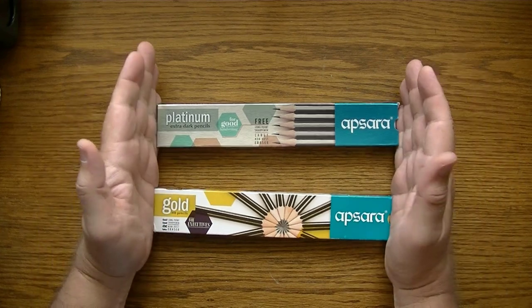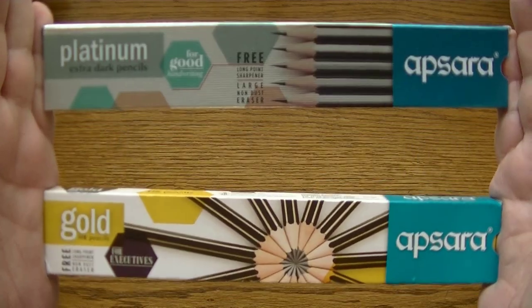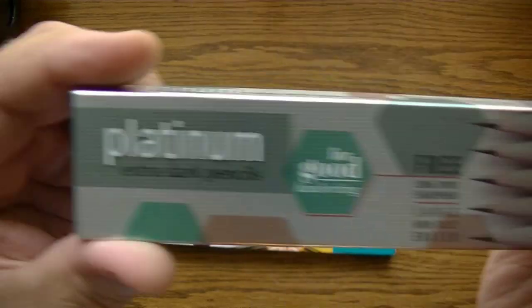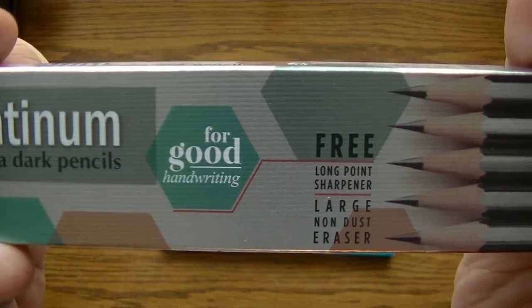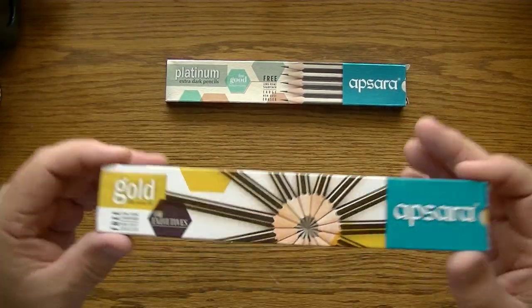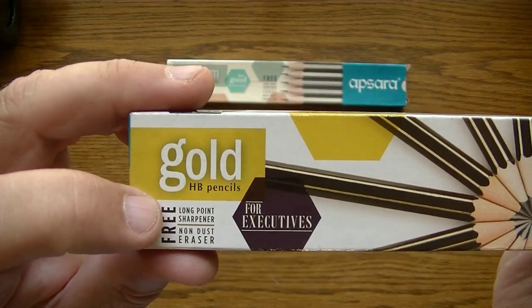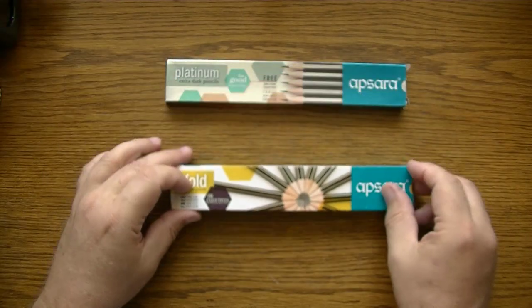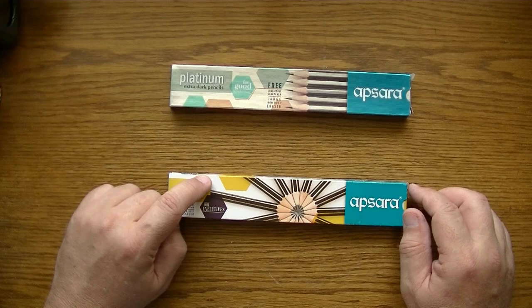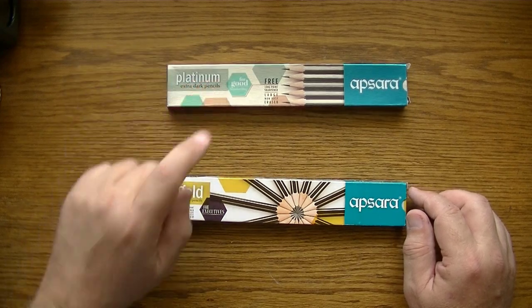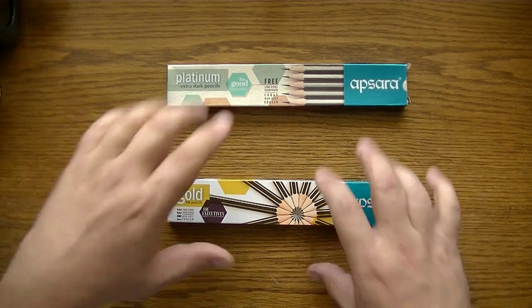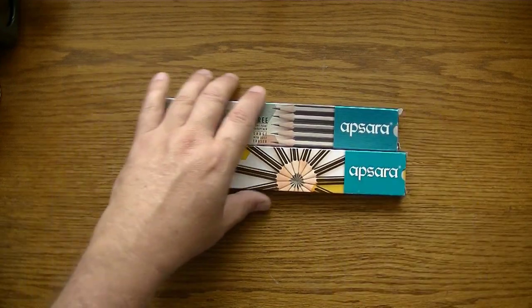Alright so these are the two pencils I'm going to put head to head. First we have the Apsara Platinum Extra Dark Pencils for good handwriting. Comes with the eraser and the sharpener. And the Apsara Gold HB Pencils for Executives. Down in the link below or the description area below you can find the links to each video, the one for the Platinum and the review on the gold that recently was released. So let's get right down to the comparison part of these two pencils.